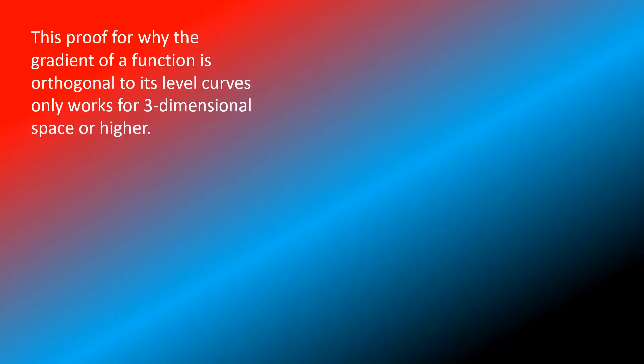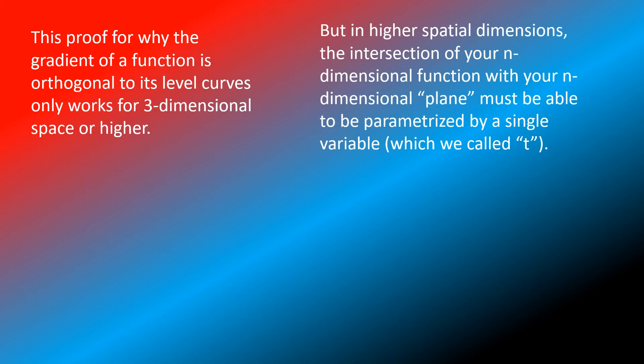So this proof for why the gradient of a function is orthogonal to its level curves only works for three-dimensional space or higher, because only in three spatial dimensions does it become possible that we can intersect some manifold with a level plane to form a line, or a one-dimensional curve. But in higher spatial dimensions, the intersection of your n-dimensional function with your n-dimensional plane must be able to be parametrized by a single variable, which we call t.